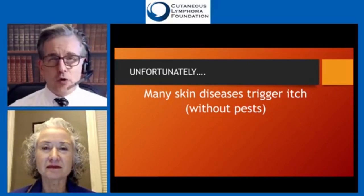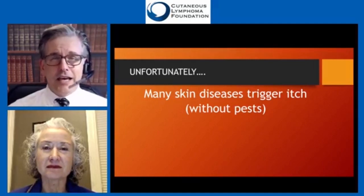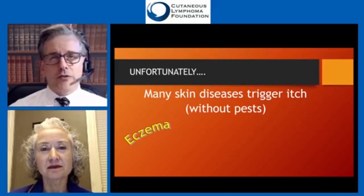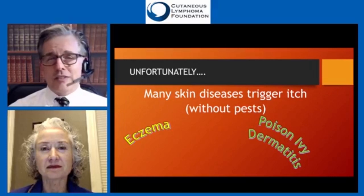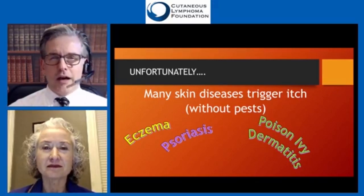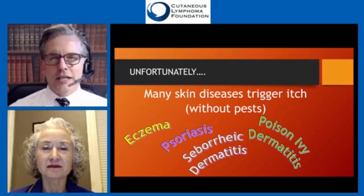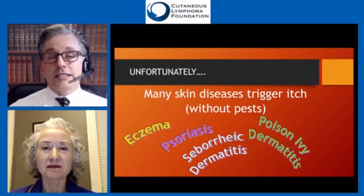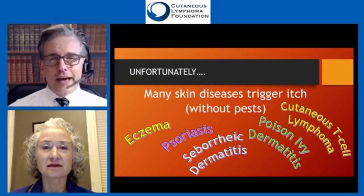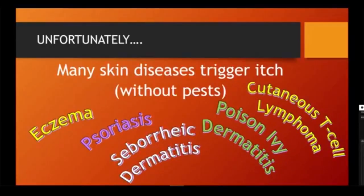Unfortunately, over time many skin diseases have evolved that trigger itch — eczema, which many people were diagnosed with before mycosis fungoides; poison ivy; psoriasis, another disease many CTCL patients were diagnosed with before their ultimate diagnosis; seborrheic dermatitis; and of course, cutaneous T-cell lymphoma. We're going to be focusing a lot on cutaneous lymphoma for the rest of the talk.